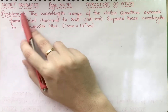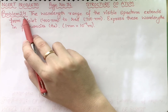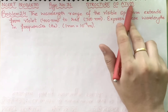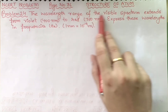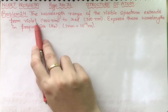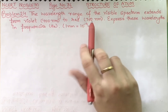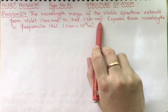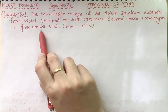We are solving problem number 2.4 from page number 36 of Structure of Atom. The problem states that the wavelength range of the visible spectrum extends from violet, having wavelength 400 nanometers, to red, having wavelength 750 nanometers. They are asking us to express these wavelengths in frequencies.